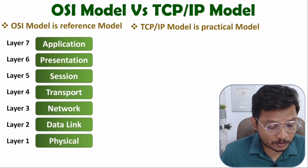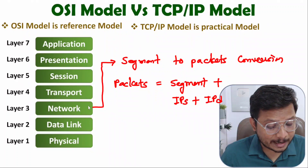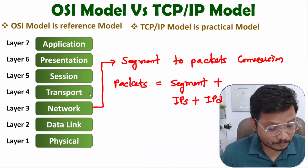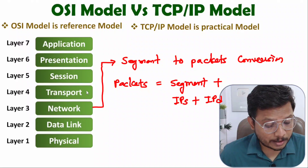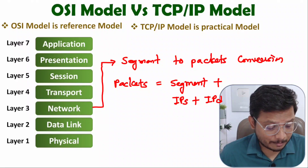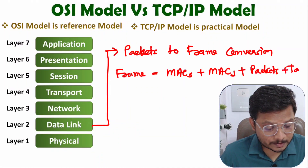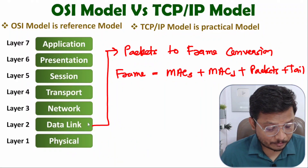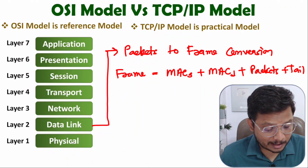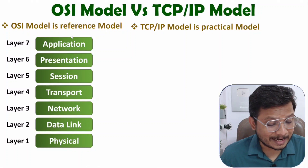Once we have segments, those segments are converted into packets at the network layer, where we add IP addresses of source and destination. Those packets are then converted into frames at the data link layer, where we add MAC addresses of source and destination along with tail bits. Finally at the physical layer, frames are represented in binary and converted into signals.